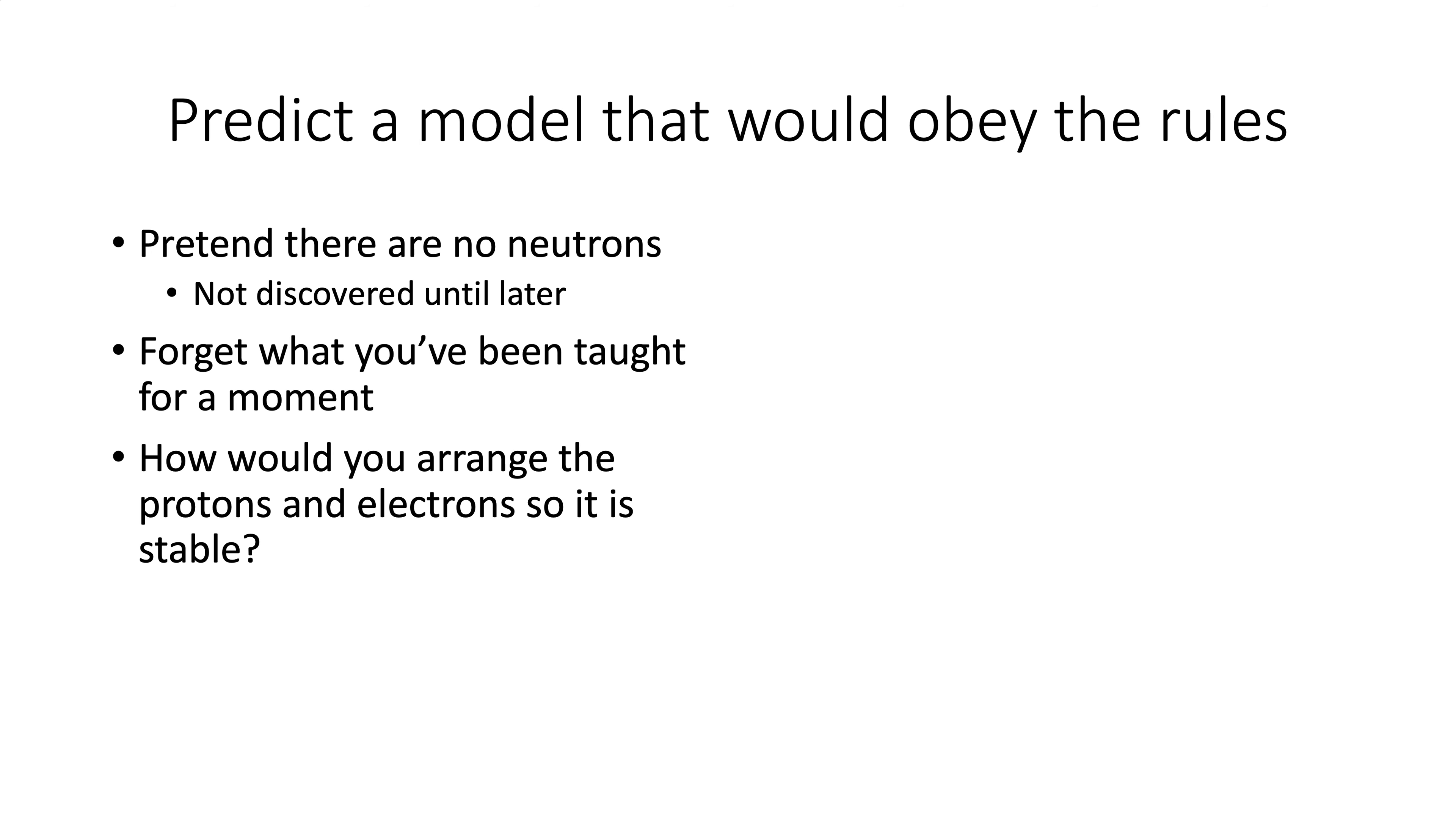All right, so let's pretend for a moment that there's no neutrons, and let's see, you've got positives and negatives, equal amounts. How would you, and forget what you've ever been taught about the model of atom, how would you arrange the protons and electrons so it's stable? So I'll give you guys a moment. This is where you can hit pause. All right, did you come up with an idea?